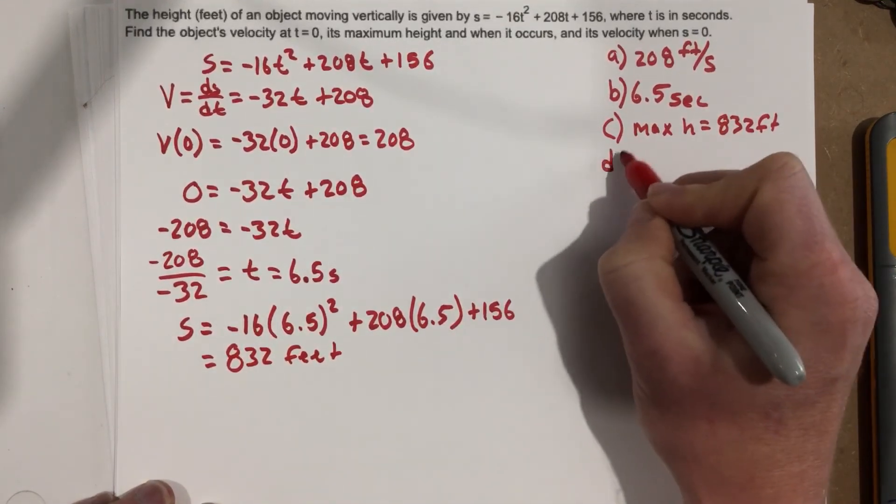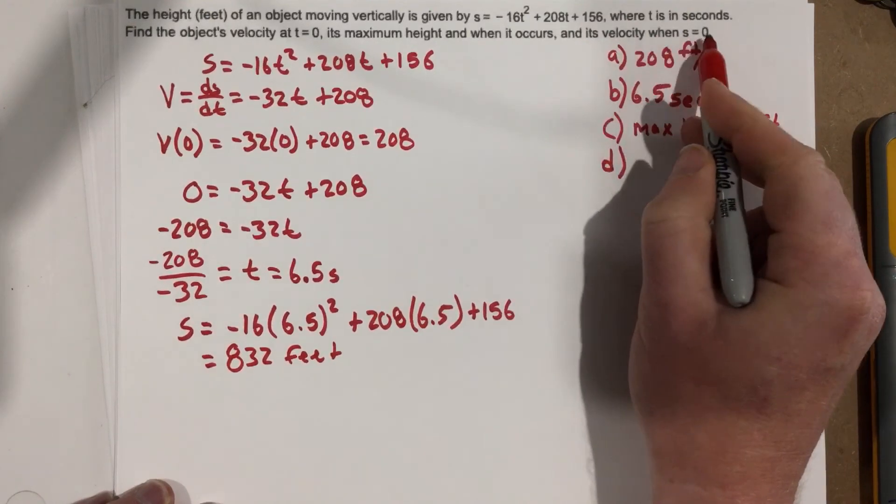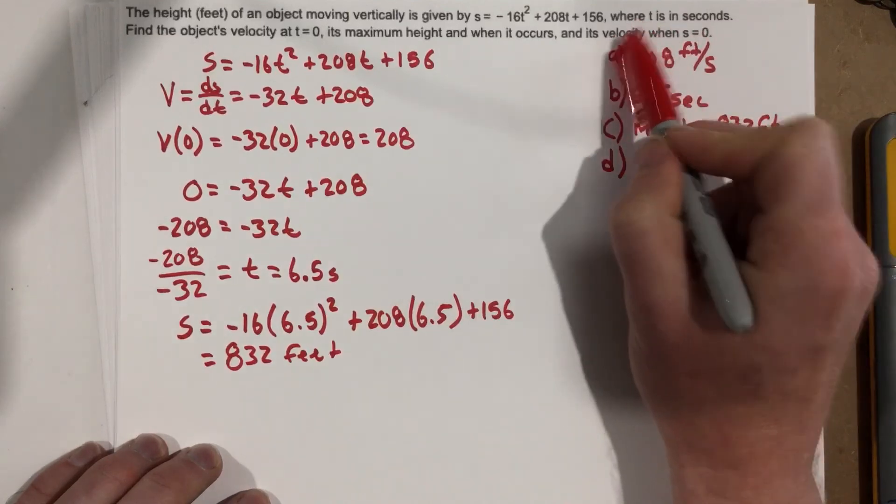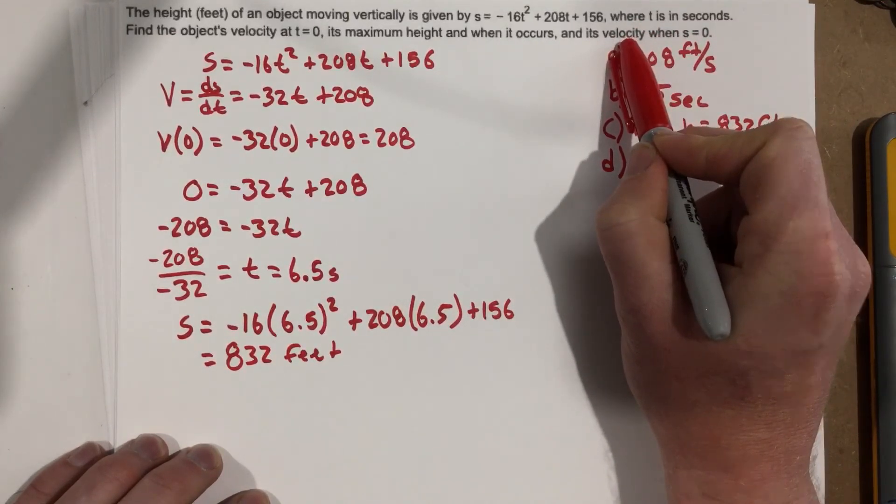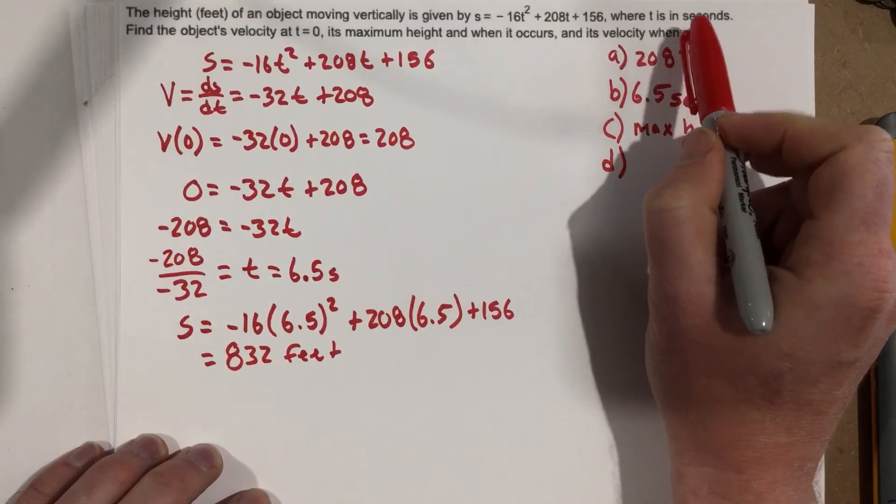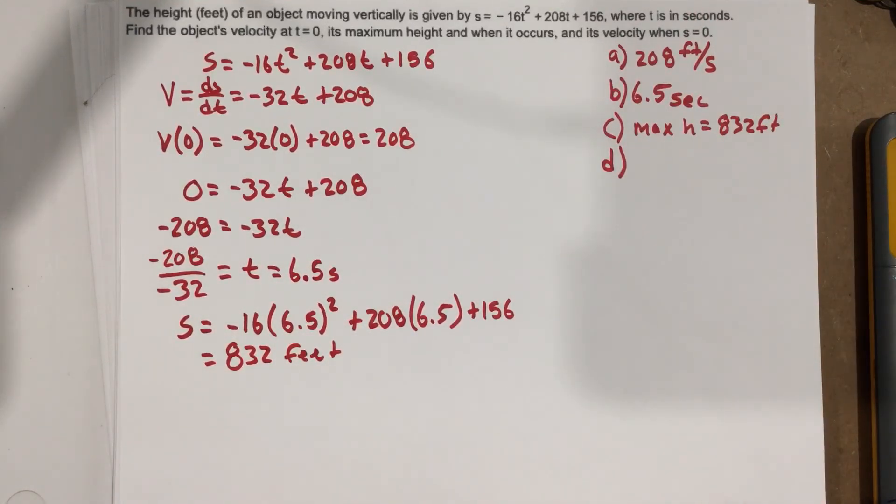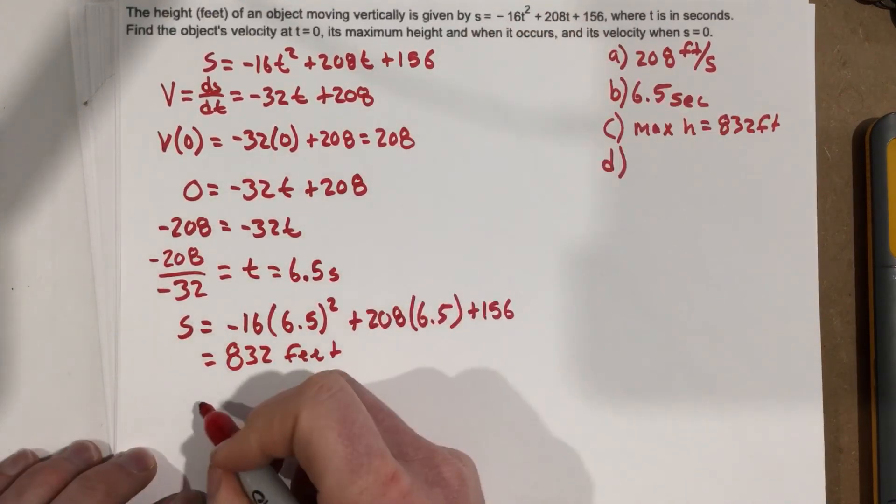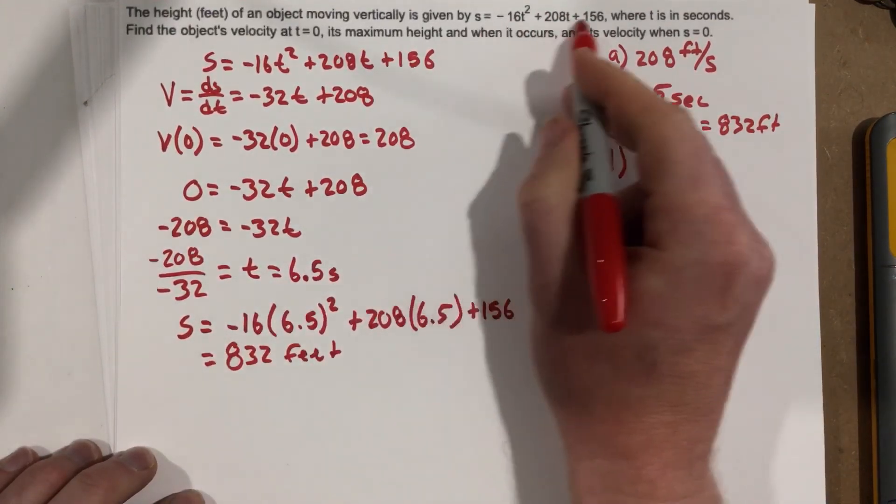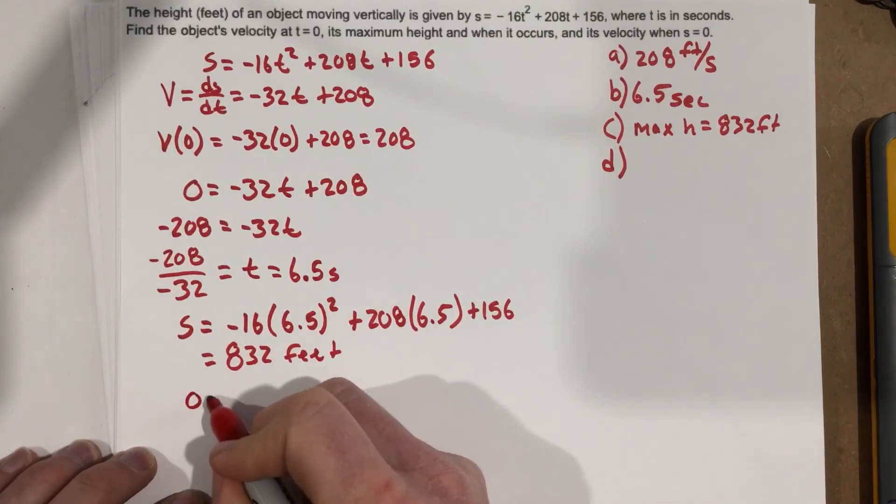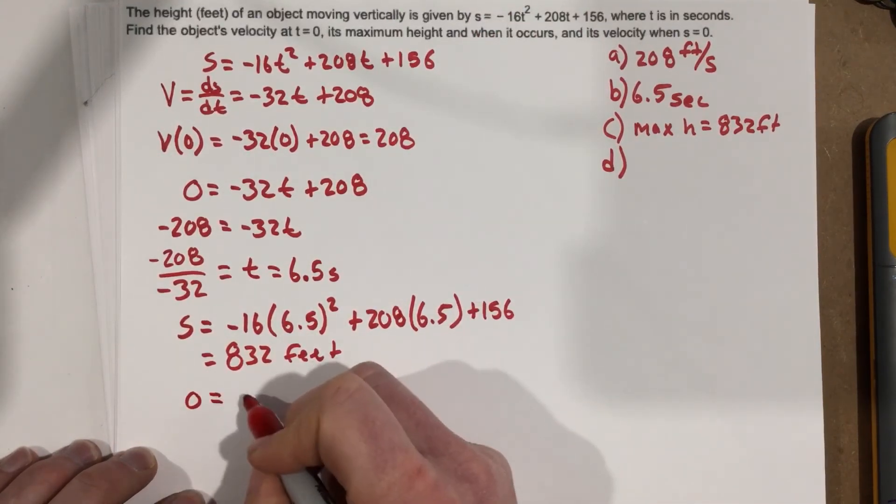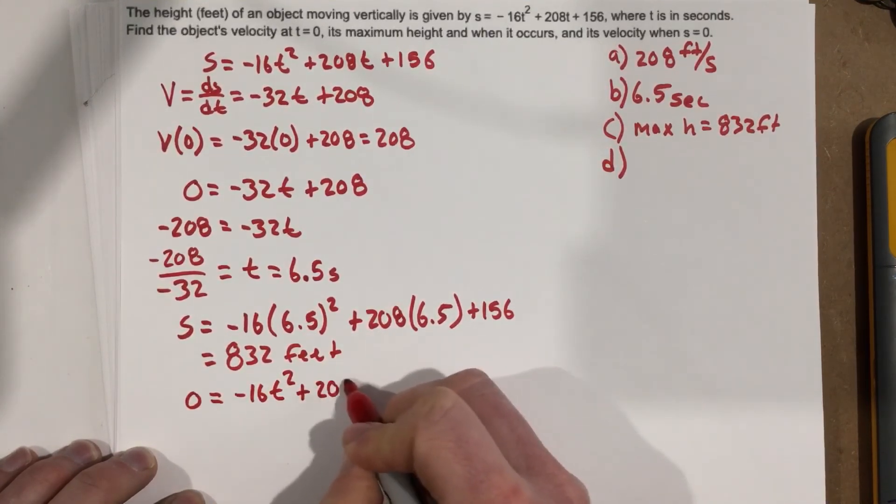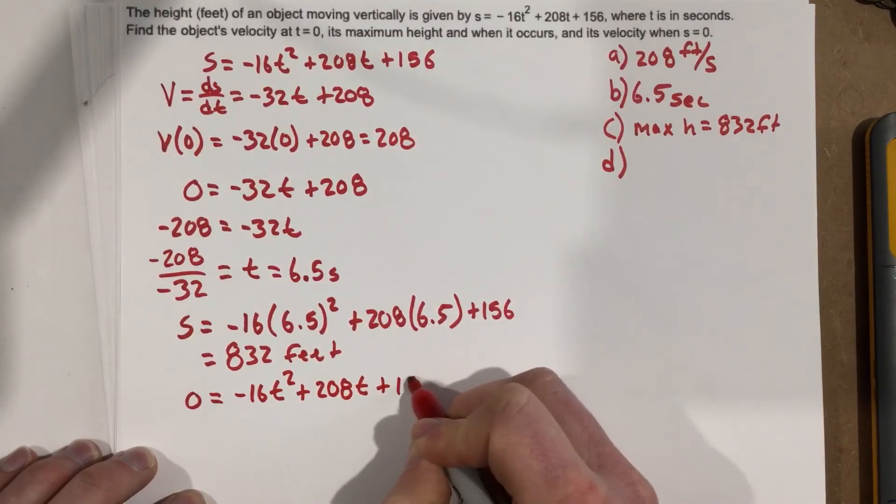Alright, part D, and its velocity when S is 0. So now they want to know, when your height is 0, what's the velocity? Well, we've got to figure out when is our height 0? So let's go ahead and do that. When is our height 0? We're going to set 0 equal to this function here. So 0 equal to the height function. Negative 16t squared plus 208t plus 156.